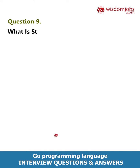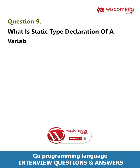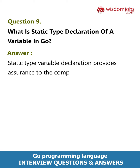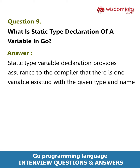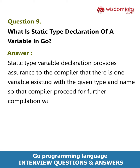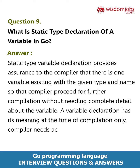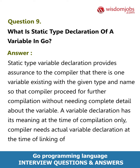Question 9: What is static type declaration of a variable in Go? Answer: Static type variable declaration provides assurance to the compiler that there is one variable existing with the given type and name, so that the compiler can proceed for further compilation without needing complete detail about the variable. A variable declaration has its meaning at the time of compilation only. The compiler needs the actual variable declaration at the time of linking of the program.